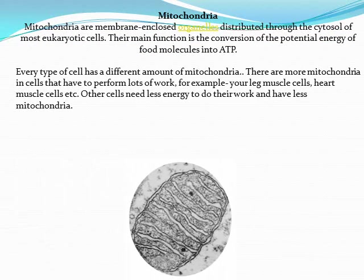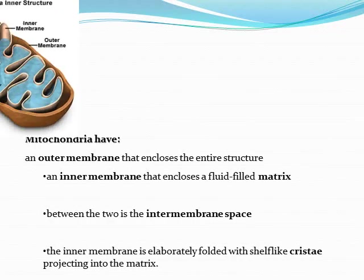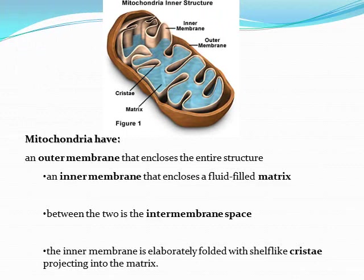Mitochondria is known as the powerhouse of the cell because it produces energy in the form of ATP. It is basically the site of respiration. It is a double-layered structure and, like the nucleus, it contains its own DNA.